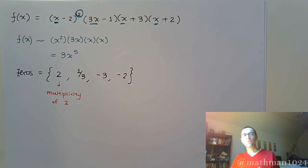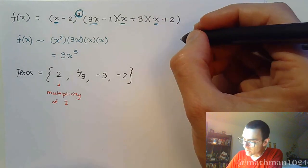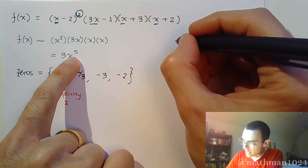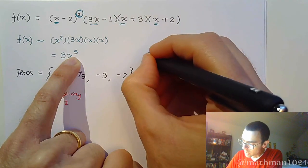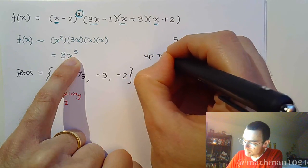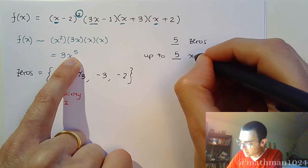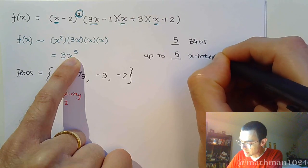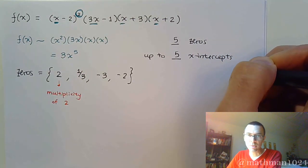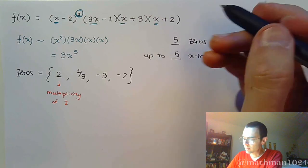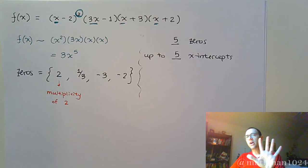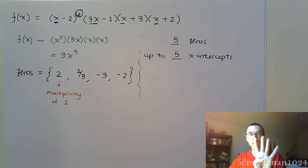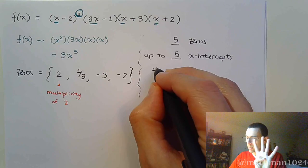Now in terms of the notes that we made for the last problem, we start off here and we said this. If it's a degree 5, that means we would have 5 zeros, we would have up to 5 x-intercepts. And in terms of the turning points, so it's degree 5, so degree 5 means we have 5 zeros up to 5 x-intercepts. But turning points is n minus 1, so take 1 off.